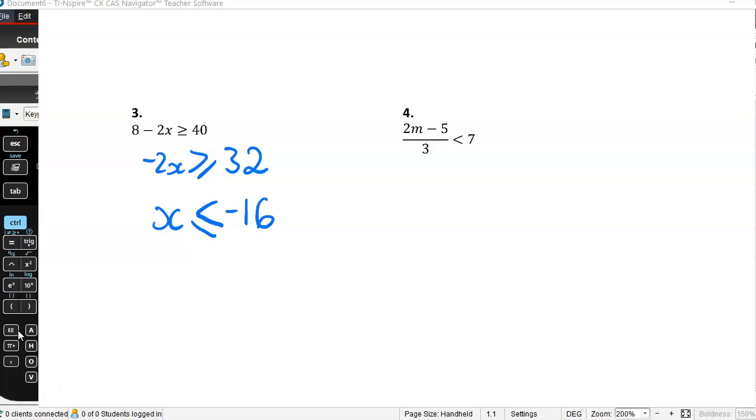Example 4. I've got 2m minus 5 over 3, less than 7. So 2m minus 5 is less than 21. I'm going to add 5 to either side. So 2m is less than 26, which means m is less than 13.